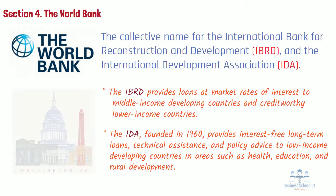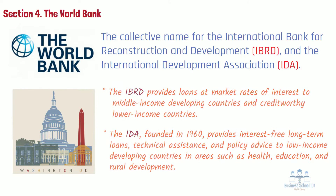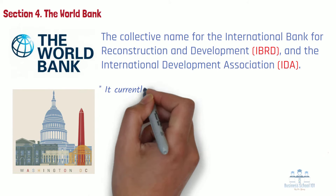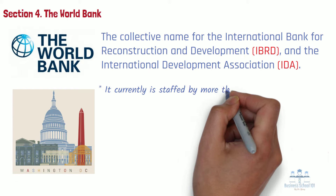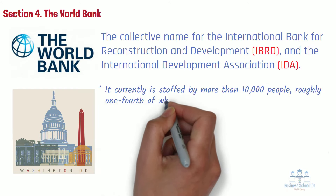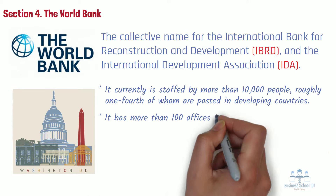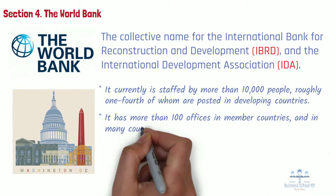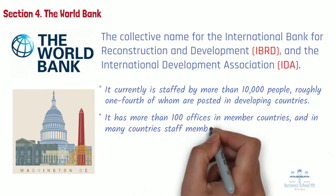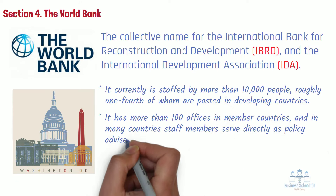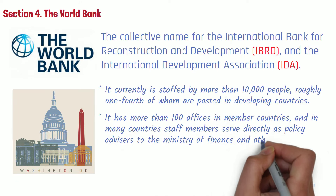Headquartered in Washington, D.C., United States, the World Bank currently is staffed by more than 10,000 people, roughly one-fourth of whom are posted in developing countries. It is run by a president and 25 executive directors, as well as 29 various vice presidents. It has more than 100 offices in member countries, and in many countries, staff members serve directly as policy advisors to the Ministry of Finance and other ministries.